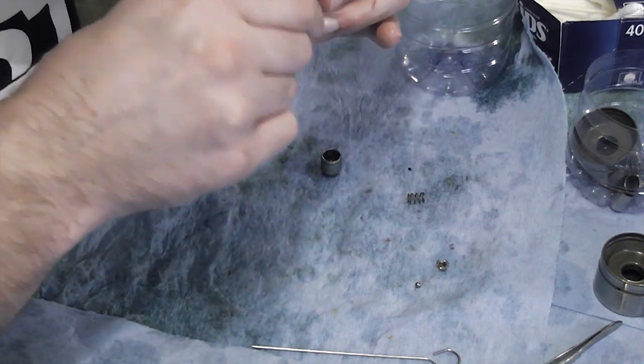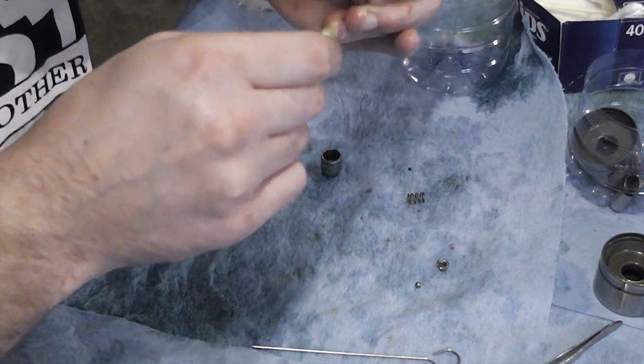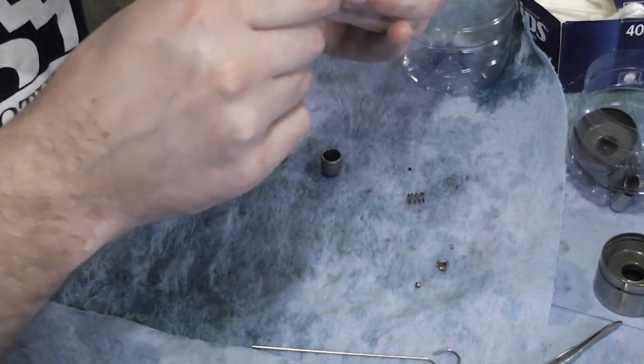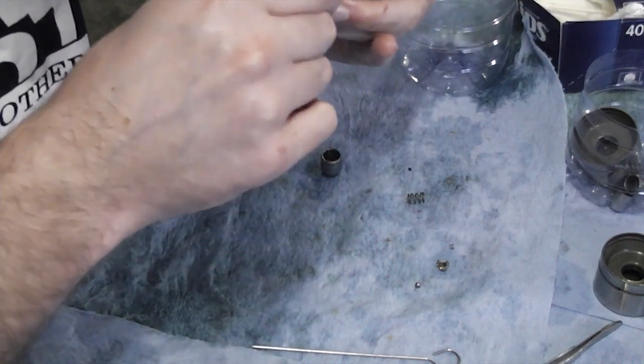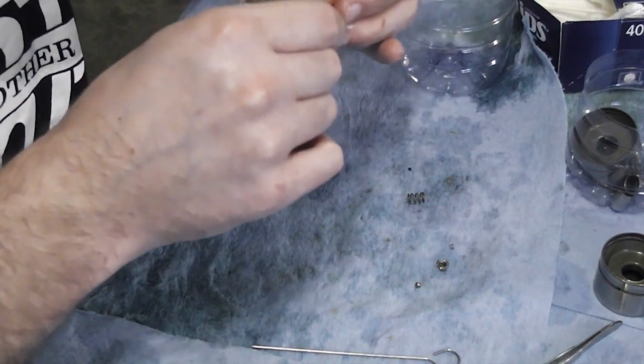Also take the time, even if there is no rust or anything on it, take the time to wipe the seat where the ball sits on because this is what makes a hydraulic lifter work. It's this little ball that's going to sit right here.